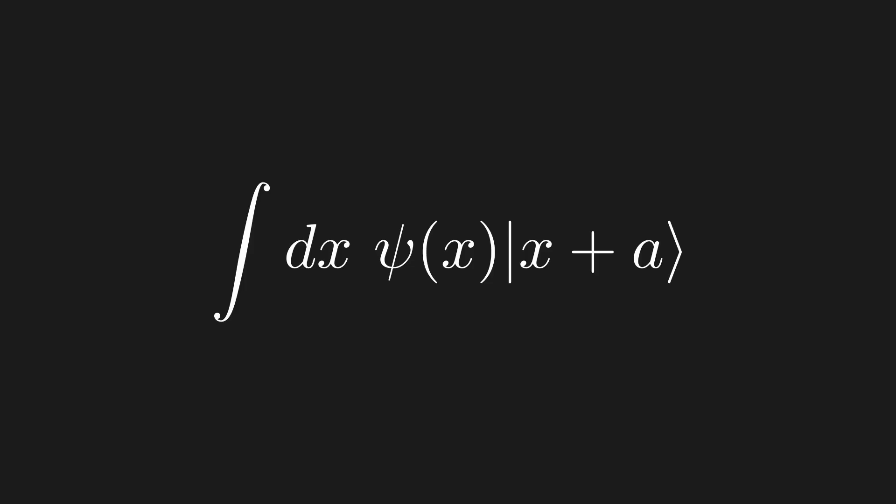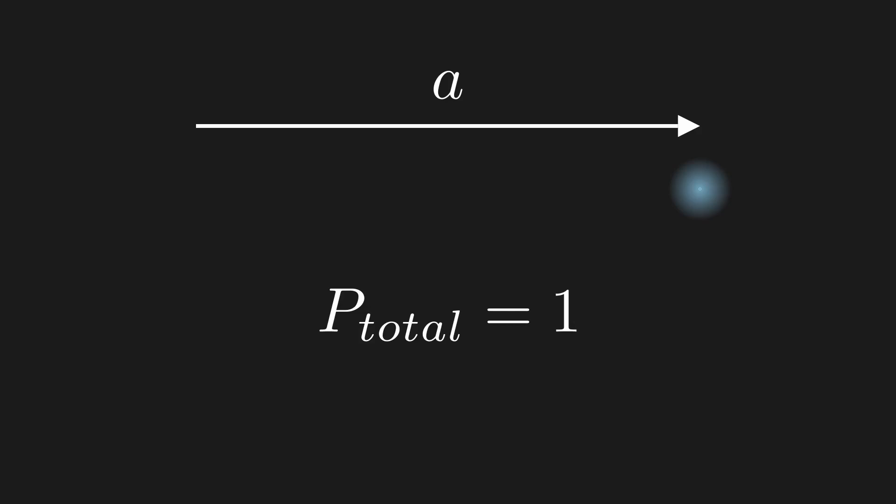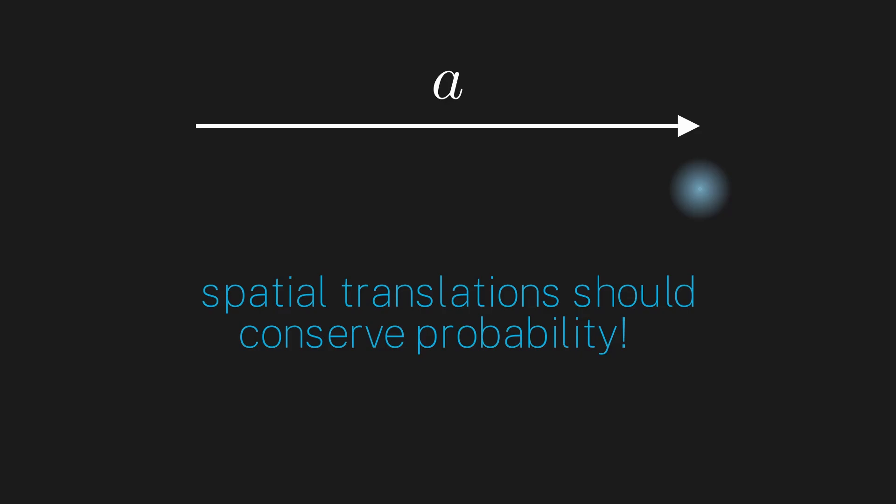Looking at what we have here, the translation operator has a pretty intuitive interpretation: since this operator shifts all the position kets of our quantum state over, it intuitively takes our quantum state and shifts it over by distance a. With this intuition we can already extract something incredibly important — since we're doing nothing else to the particle, just moving it over by distance a, we should expect that the total probability of our particle should still equal one. In other words, spatial translations should conserve total probability.